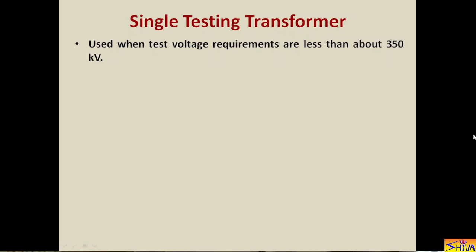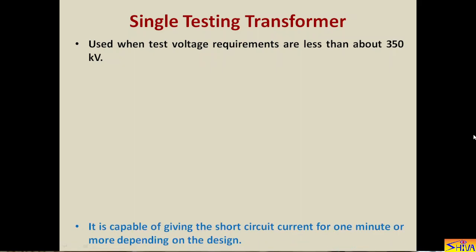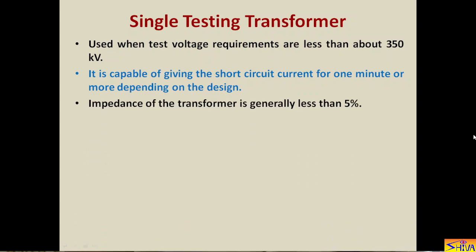Now let us see the salient features of the single testing transformer. Number one: they are used when test voltage requirements are less than about 350 kV — the application of a single testing transformer is limited up to 350 kV. Number two: it is capable of giving short circuit current for one minute or more depending on the design. For example, a 150 kV transformer with a KVA rating of 15 kVA will have a rated short circuit current of 100 milliamperes and will be capable of supplying this current for one minute. Number three: the impedance of the transformer is generally less than 5%.